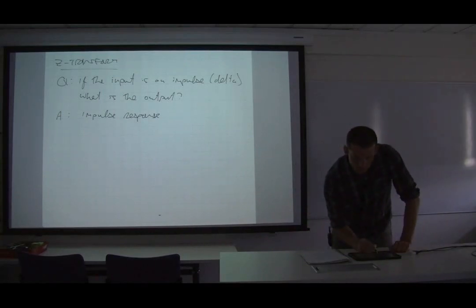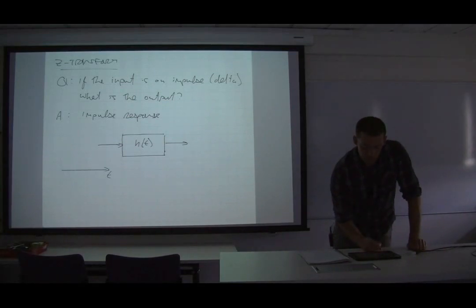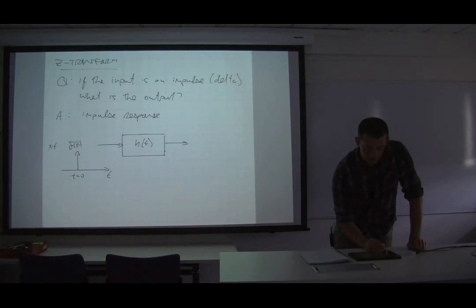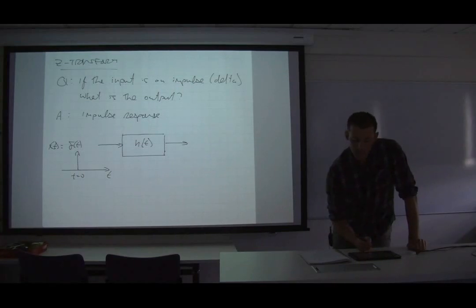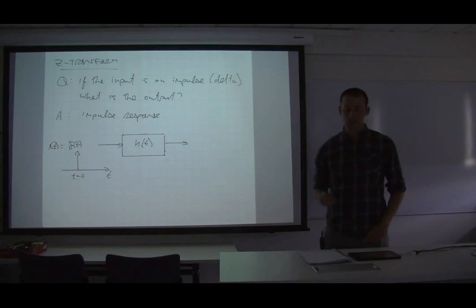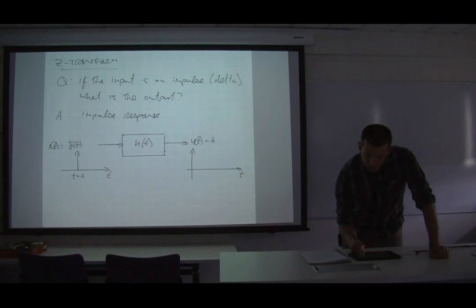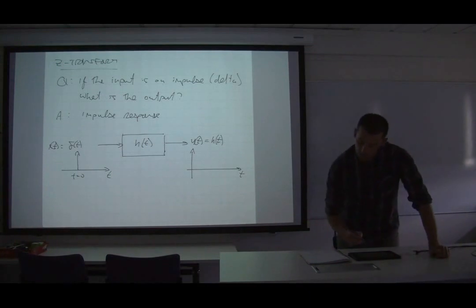For example, we have a linear system which has an impulse response H of T. The input X of T equals delta of T — an impulse at T equals zero. The output Y of T, which in this case equals H of T by definition because the input is a delta function, might look like a decaying sinusoidal, exponentially decaying waveform.